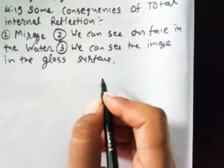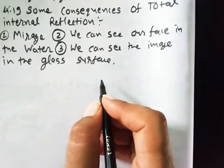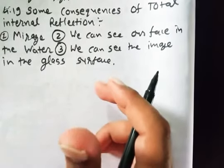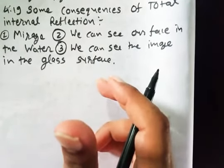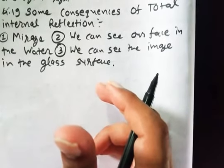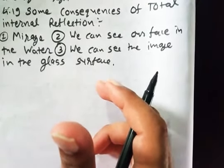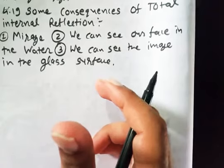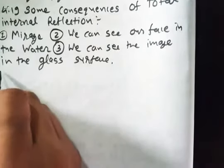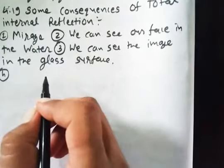Because of total reflection we can see our face as a mirror in that glass. Glass is a transparent medium but we can see our face. Now the fourth one, fourth one is optical fiber.